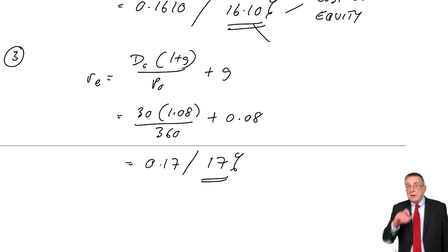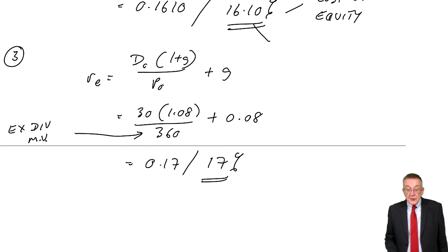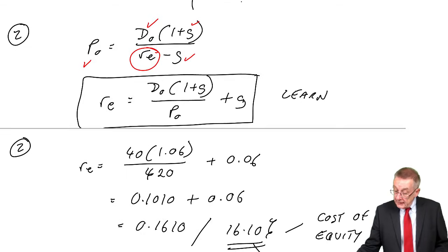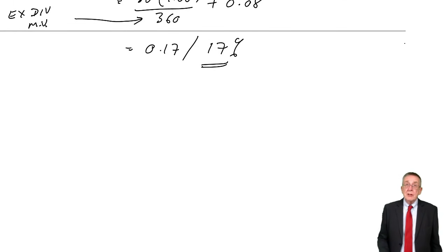Do remember that P0 is the ex div market value. Without redoing it, in example three, if it had said a dividend of 30 cents was about to be paid, if the cum div market value is 360, the ex div market value, we'd subtract 30 cents, and it's the ex div value that you use in this formula. That will definitely be asked in the exam. There's absolutely no doubt it's always there. If I were you, I would learn the formula. You won't have time in the middle of the exam to rearrange the P0 formula.